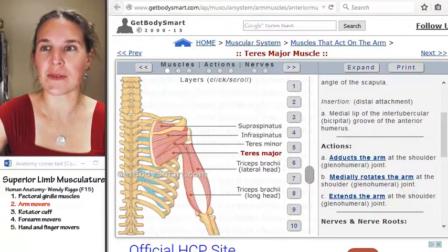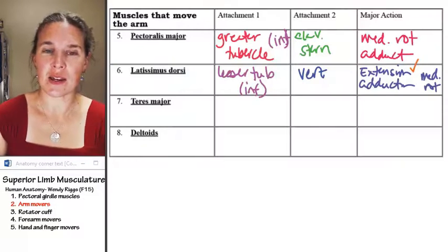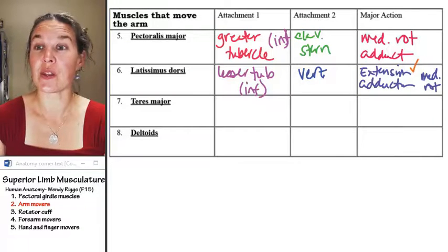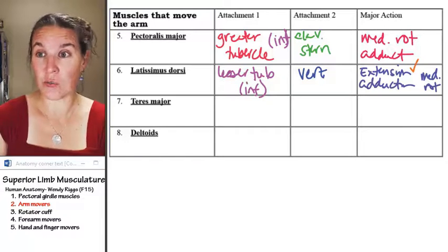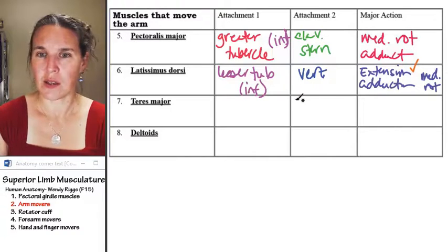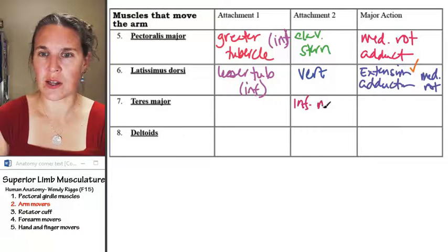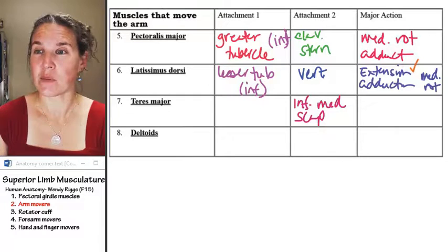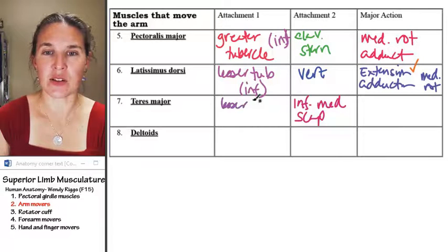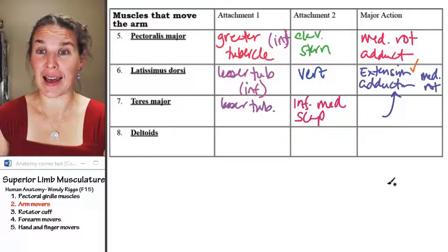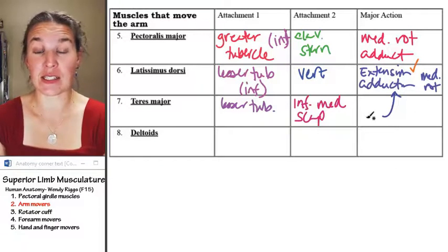Teres minor, we're not going to talk about yet, because we're going to do that in another group. So let's see what we can remember. Teres major attached to the inferior and medial border of scapula, and then it also attaches to the lesser tubercle, and let's just say it does the same stuff that latissimus dorsi does.